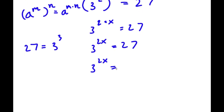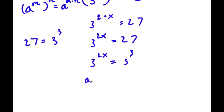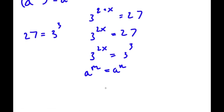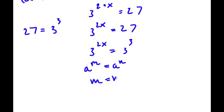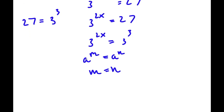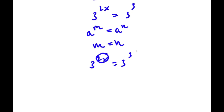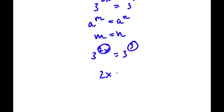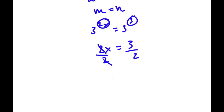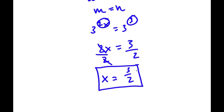Now 27 is the same thing as 3 to the power of 3. So I have 3 to the power of 2x is equal to 3 to the power of 3. And if I have something in the form a to the power of m is equal to a to the power of n, then m is simply equal to n — because if both bases are the same, both exponents are the same as well. So our exponents are 2x and 3, meaning 2x is equal to 3. Dividing both sides by 2 gives x is equal to 3 over 2.